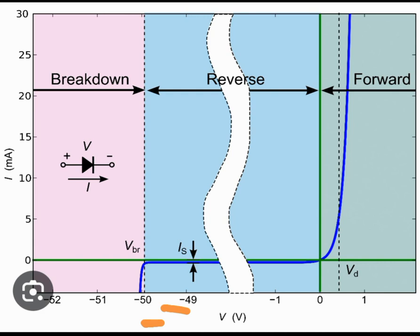This leakage current, which is negligible in the reverse bias region, now suddenly starts to increase. You have a sudden negative current flowing through the diode, a sudden increase or avalanche of the current flowing through the diode.